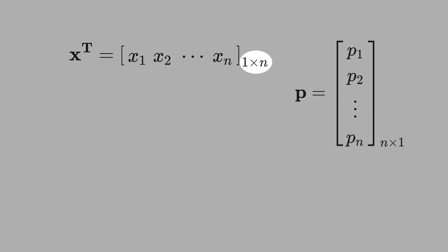Vector is an array of numbers that is arranged in order. See here that you have one row and n columns, and here you have n rows and one column.